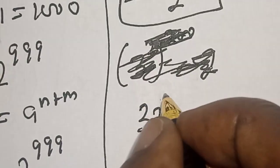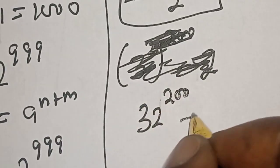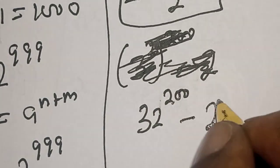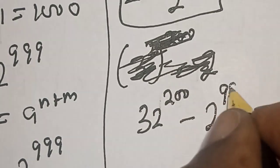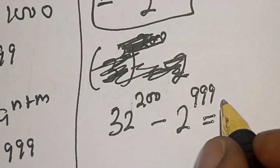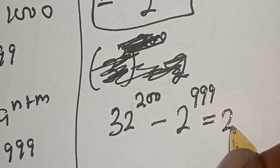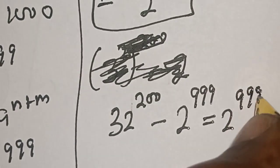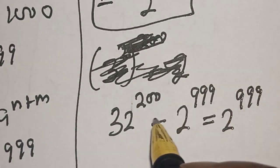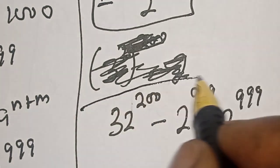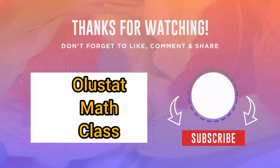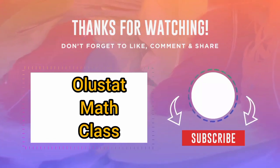32 raised to power 200 minus 2 raised to power 999 is equal to 2 raised to power 999. If you enjoyed the class, please don't forget to like, share, comment and subscribe. Thank you.